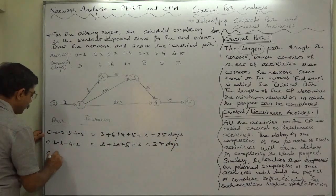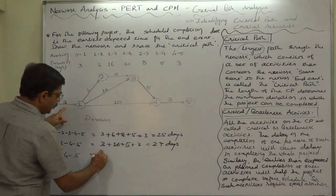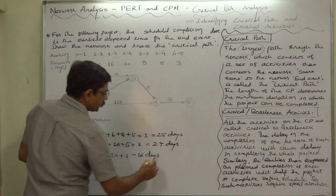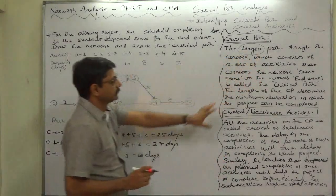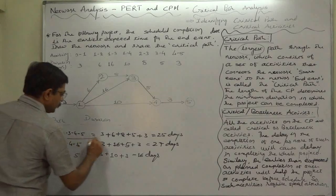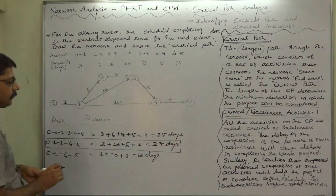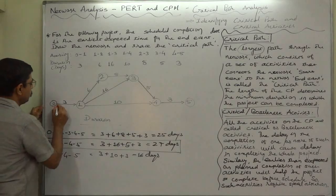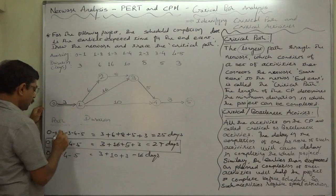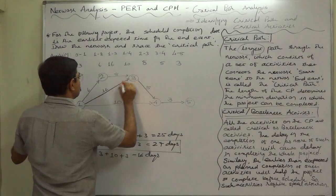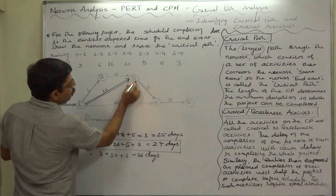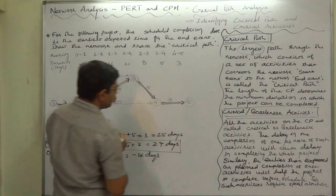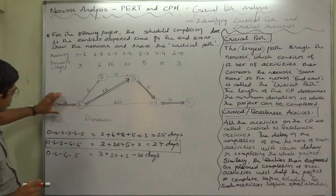The third possible path is 0 → 1 → 4 → 5, which takes 3 + 10 + 3 = 16 days. The longest path, taking the highest number of days to reach the end event from the start event, is 0 → 1 → 3 → 4 → 5, which takes 27 days. According to the definition, this is the critical path.